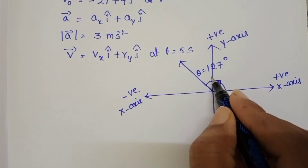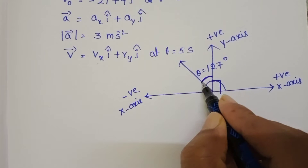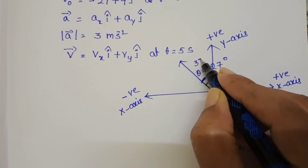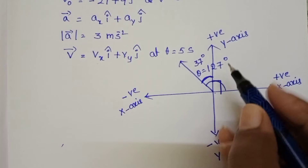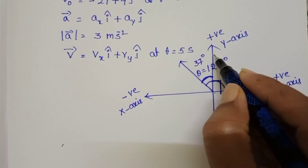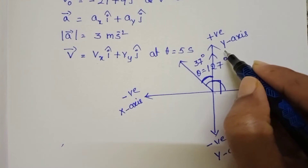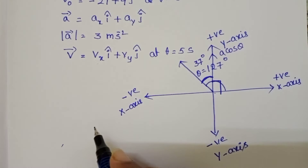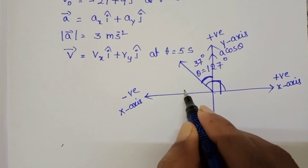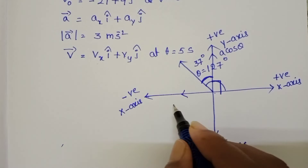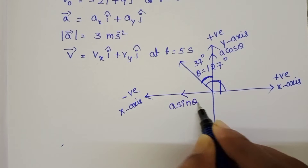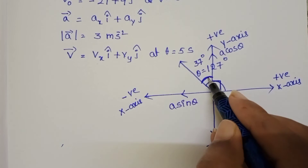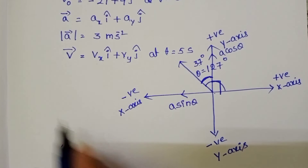The given acceleration vector makes an angle theta equals 127 degrees with the positive x-axis. Since 127 degrees equals 90 degrees plus 37 degrees, with the y-axis this angle becomes 37 degrees. The component of acceleration along the positive y direction is A cos theta, and along the negative x-axis it becomes A sin theta, where the angle is 37 degrees.